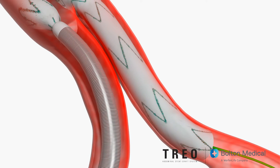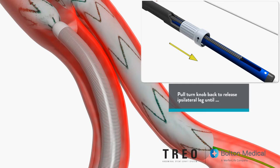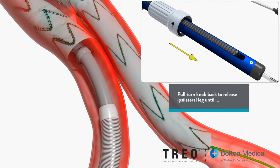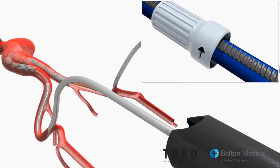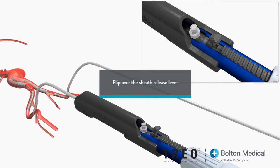Finalize the main bifurcated stent graft deployment by pulling the turn knob back to completely release the ipsilateral leg. Continue to pull back until the lead screw stop is seated against the back end of the delivery system. To release the sheath from the delivery system, completely flip over the sheath release lever until it clicks into place.